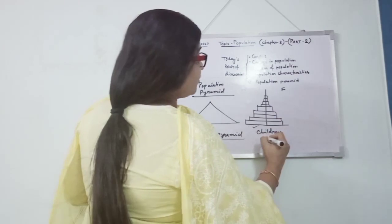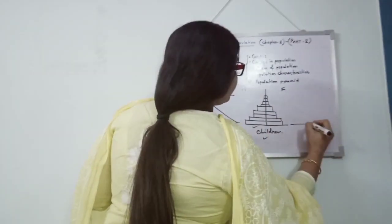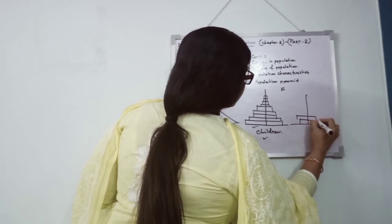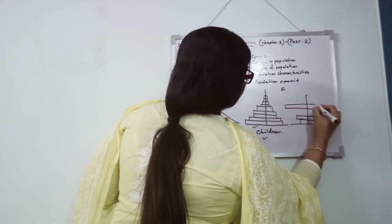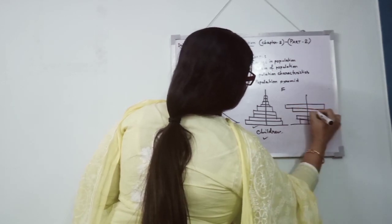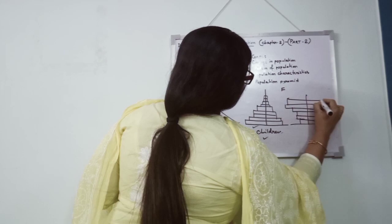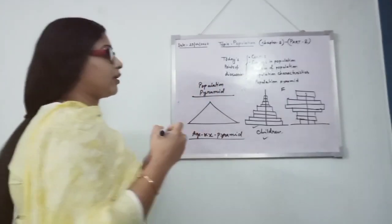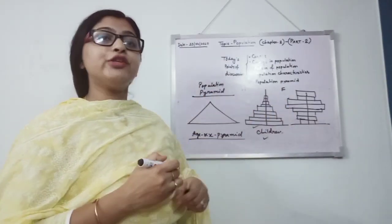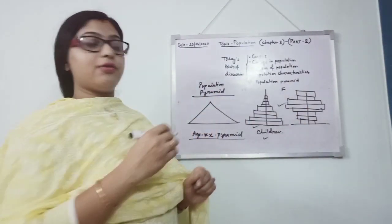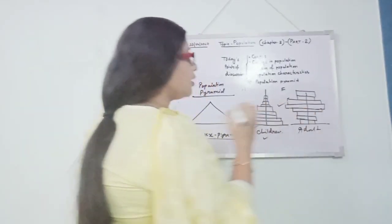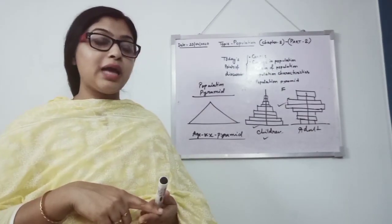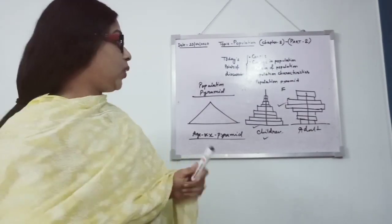So here I have given an example. Another country can have a pyramid like this. Here you are getting to see middle age at maximum, means this country's adult group is more. They are helping for the development of the country because they are the producing and working age group.